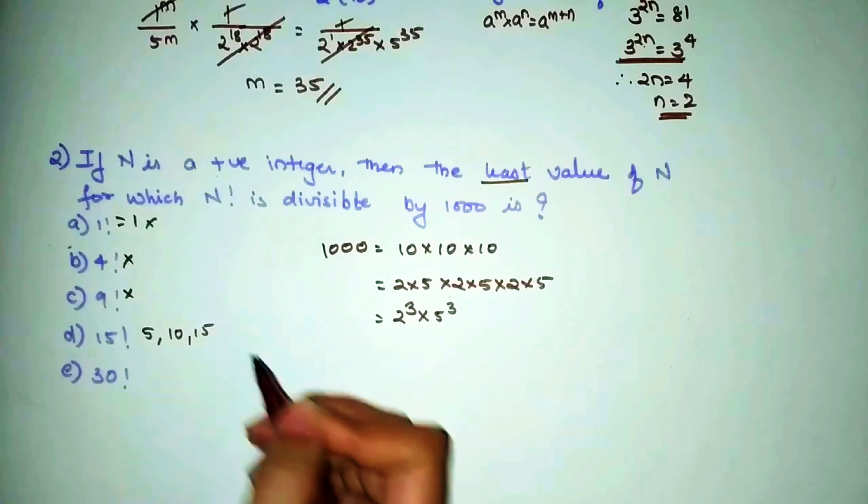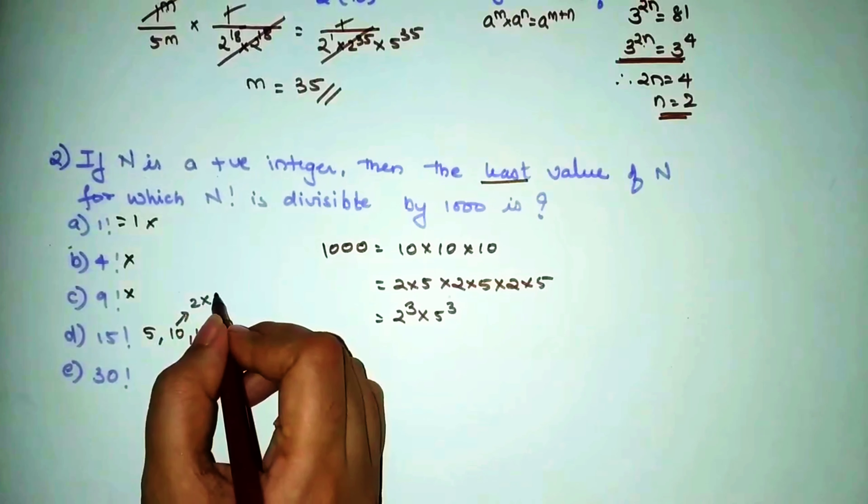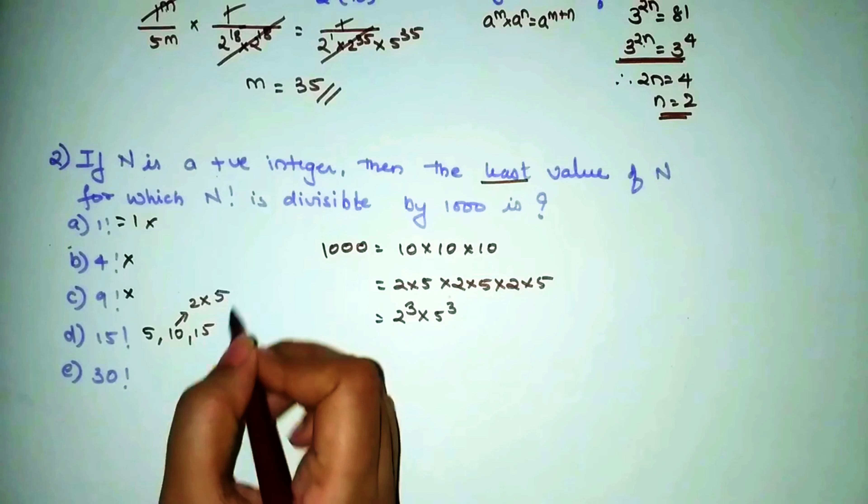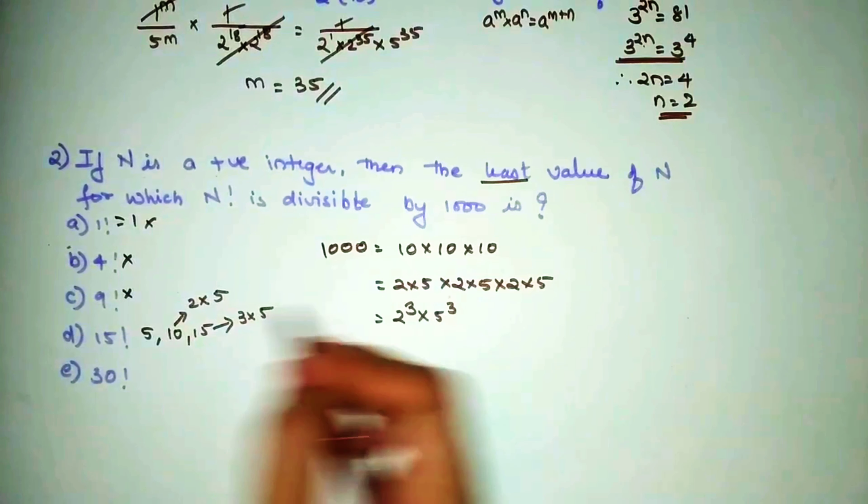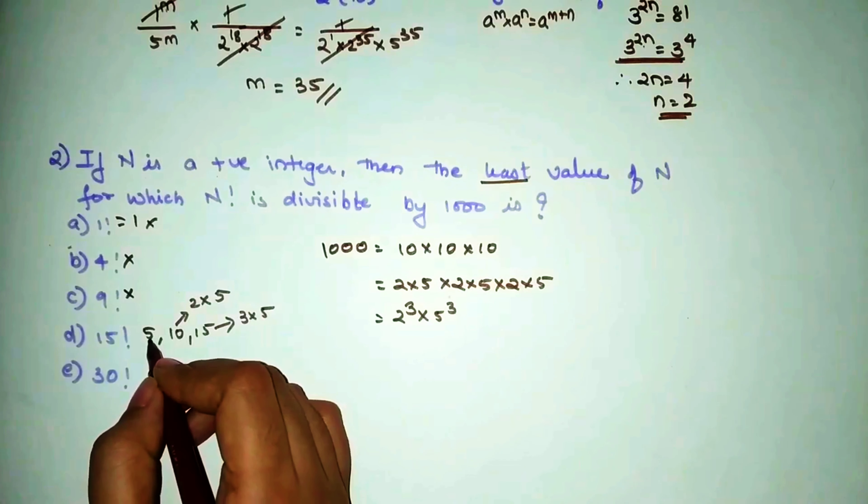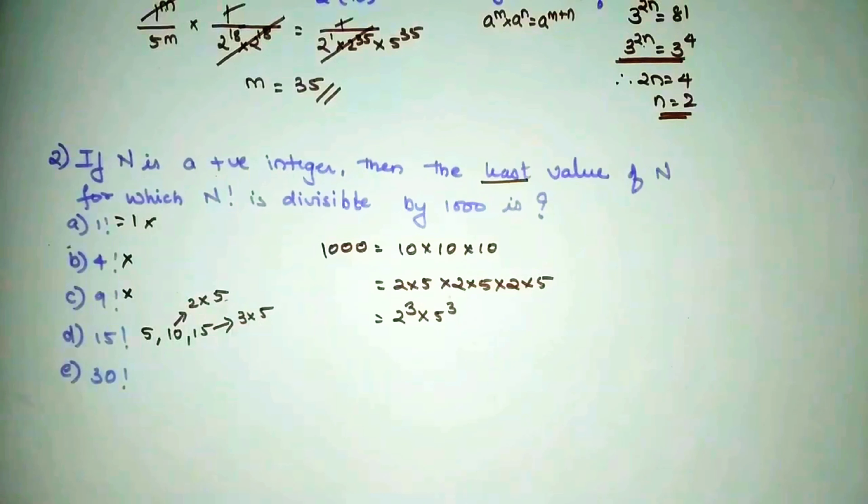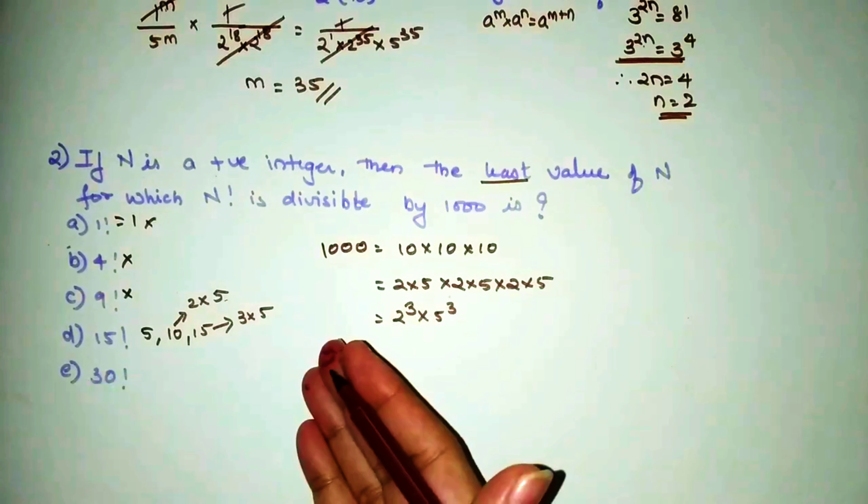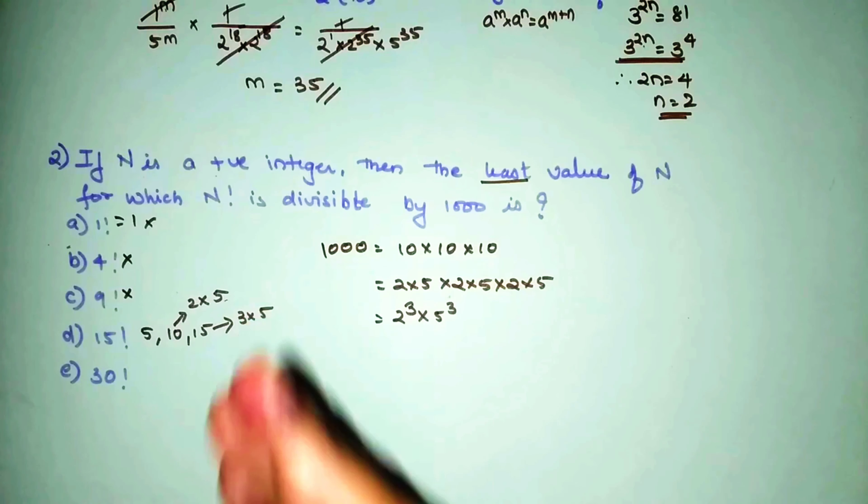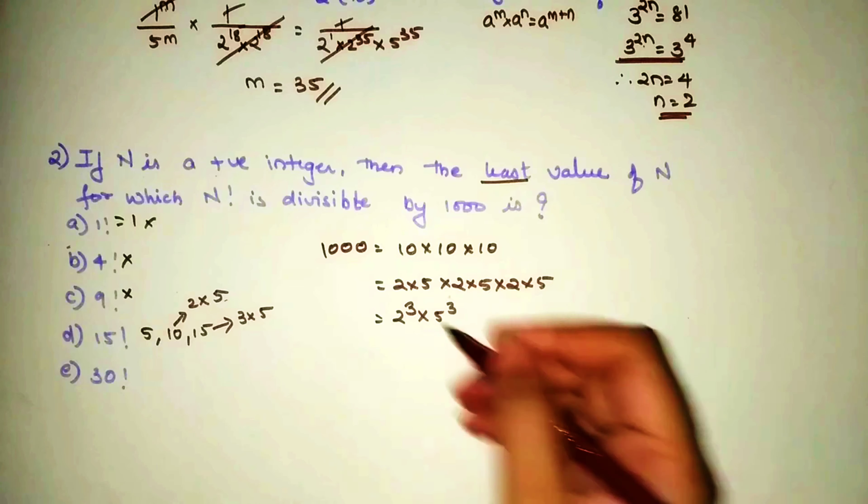Now coming to 15 factorial, yes, 15 factorial can be taken into consideration. You know why? Because here you get 5, you get 10 as well, and you get 15. So this can be said as 2×5, this can be said as 3×5. So we needed 5 to be coming how many times? 3 times. And as we can see this coming 1, 2, and 3 times. And we don't really need to bother about 2 cube, which is 8, because in 15 factorial you will start from 15, then 14, 13, 12, 11, 10, 9, and 8.